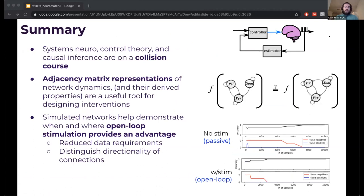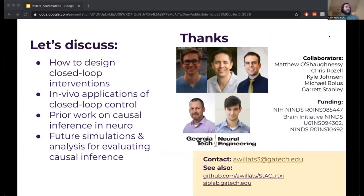In summary, I believe that systems neuroscience control theory and causal inference are on a collision course, and that's really exciting. I believe that this adjacency matrix representation of the network dynamics can be a really useful tool for anticipating how interventions might help. Our ongoing work demonstrates the cases in which stimulation may help in this causal inference procedure. I'd like to end there and thank my many collaborators who've worked with me on some of the in vivo applications of this closed-loop control, and also developed some of these ideas with me. I'd also like to use this slide to prompt discussion questions, and if you have any follow-up, feel free to use this email to ask any questions later as well. Thank you.